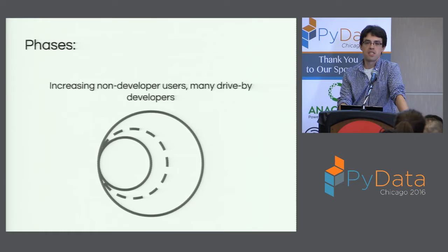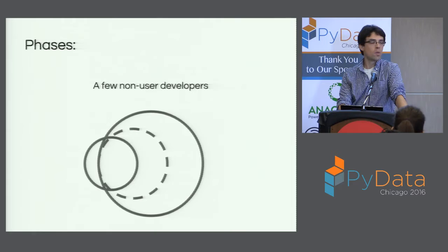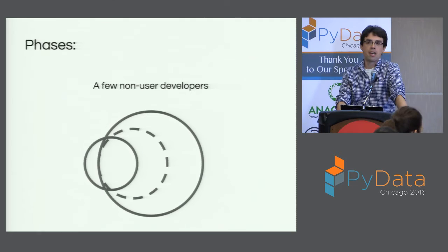We're now moving to an area where we actually have a few non-user developers — people that are developing it that don't actually rely on the outcomes of it for their own work. They're not relying on the way it operates or its functionality to, say, publish a paper. They're relying on the implementation of that functionality in and of itself. So this is where I'm coming from.